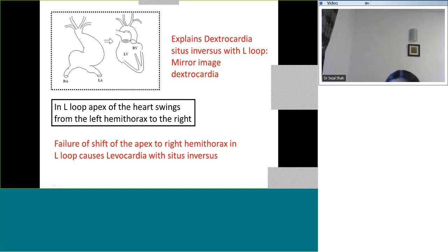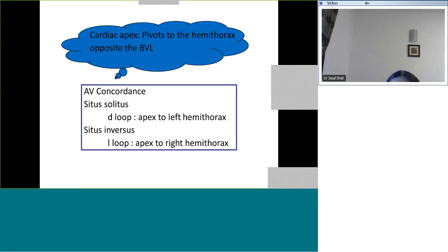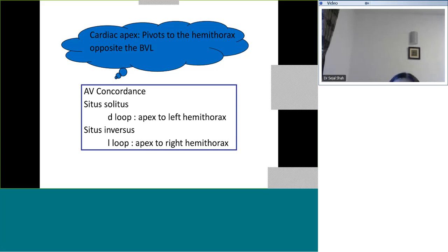To summarize: the cardiac apex pivots to the hemithorax opposite to the bulboventricular looping — so D-looped ventricles go to the left hemithorax and L-looped ventricles go to the right hemithorax. This usually occurs with atrioventricular concordance. When you have atrioventricular discordance, the process doesn't happen systematically and the heart comes to lie in the center of the chest, which is called mesocardia.